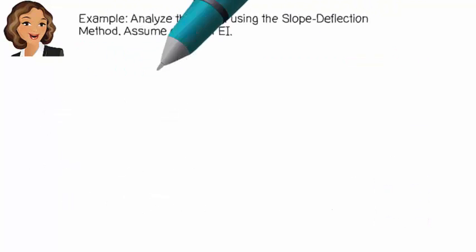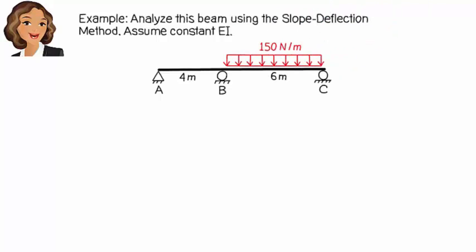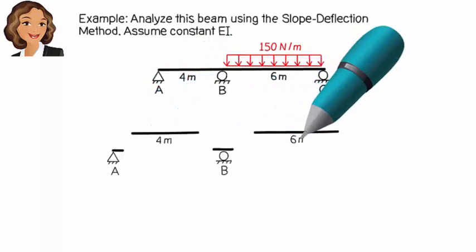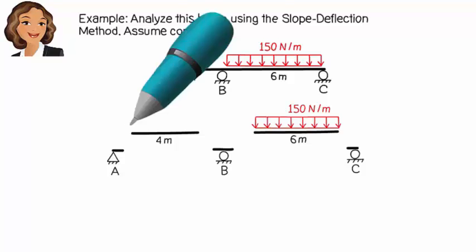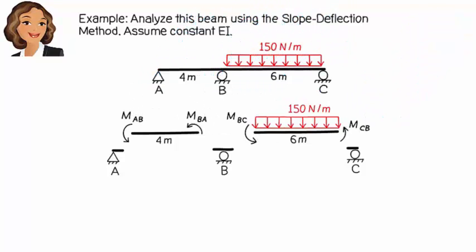Let's use an example to see these equations in action. Here is a continuous beam subjected to a uniformly distributed load. To analyse the beam using the slope-deflection method, we are going to separate the joints from the members. For each beam segment, we show the member-end moments in the positive direction, then write the slope-deflection equations for each segment.